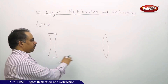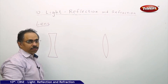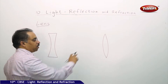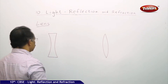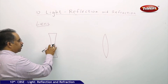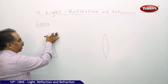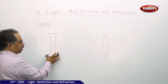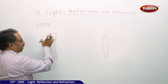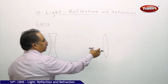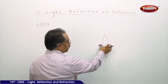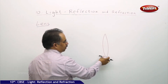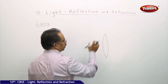These are the two types of lenses we are going to discuss. This is concave and this is convex. On the concave side, we say we have thinner at the center and bulged at the edges. On the other hand, the convex lens is bulged at the center and thinner at the edges.